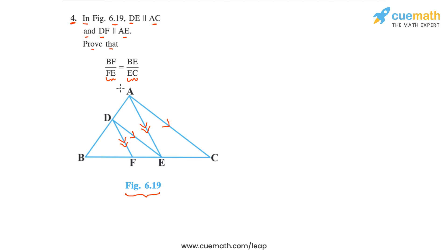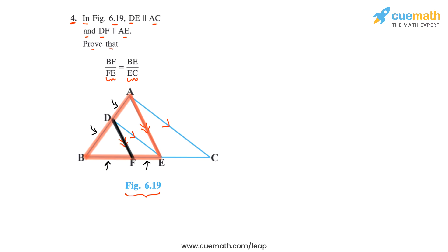Here's how we will solve this problem. First, we will apply the Basic Proportionality Theorem (BPT) to triangle ABE, since DF is parallel to AE. Applying the BPT to this triangle will give us BF by FE equal to BD by DA.